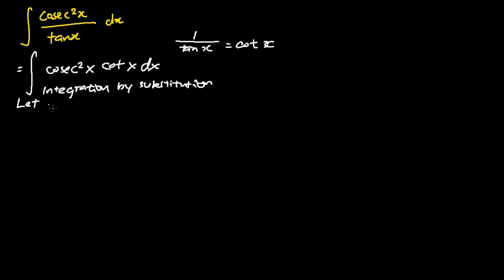For this part we let u equal cotangent x, and we differentiate u with respect to x. This gives me negative cosecant square x. When we multiply both sides by dx, I get du equals negative cosecant square x dx.